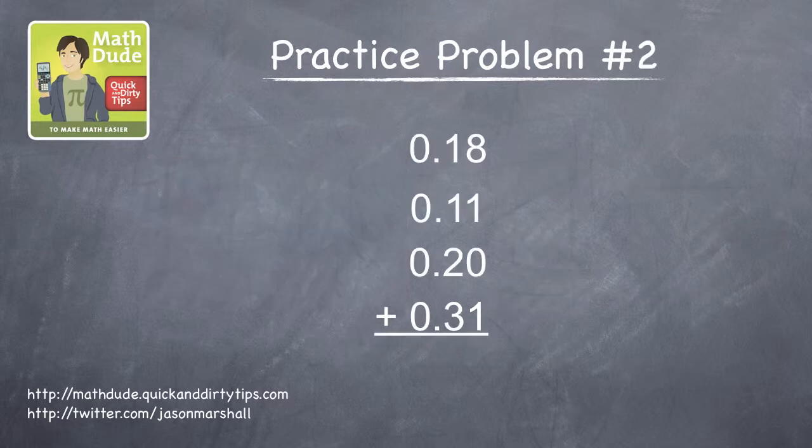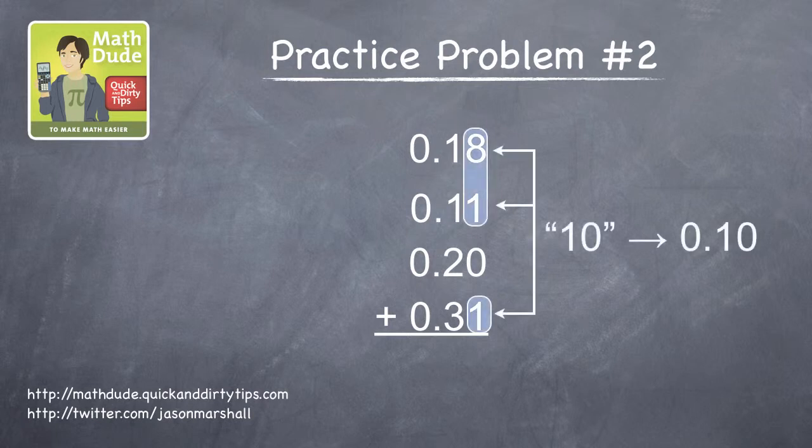In the second problem, we have a series of decimal numbers with values in both the tenths place and the hundredths place. The procedure is similar. Start with the hundredths column and look for groups of numbers that add to 10.